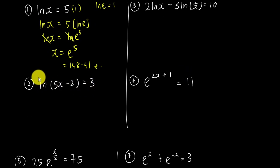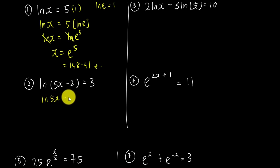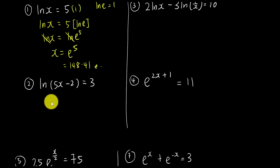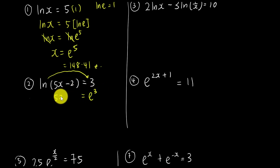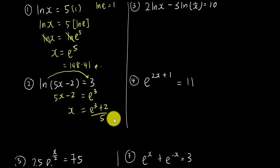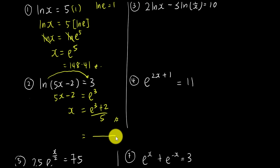For question two, be very careful with brackets — log is very different from algebra. A lot of students write ln(5x) − ln(2), but that's wrong. You cannot just expand the ln. What I do is throw the ln to the other side to get e^3, keep (5x − 2) as is, then solve: x = (e³ + 2) / 5. If the question asks for exact form, leave it like that; otherwise use a calculator.